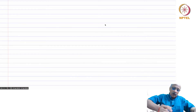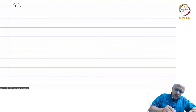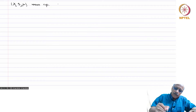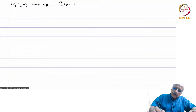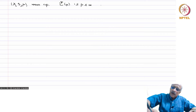We will now talk about convergence in LP spaces. Let (X, S, mu) be a measure space. LP(mu) are the spaces with 1 ≤ p ≤ infinity with the norm denoted norm_p.